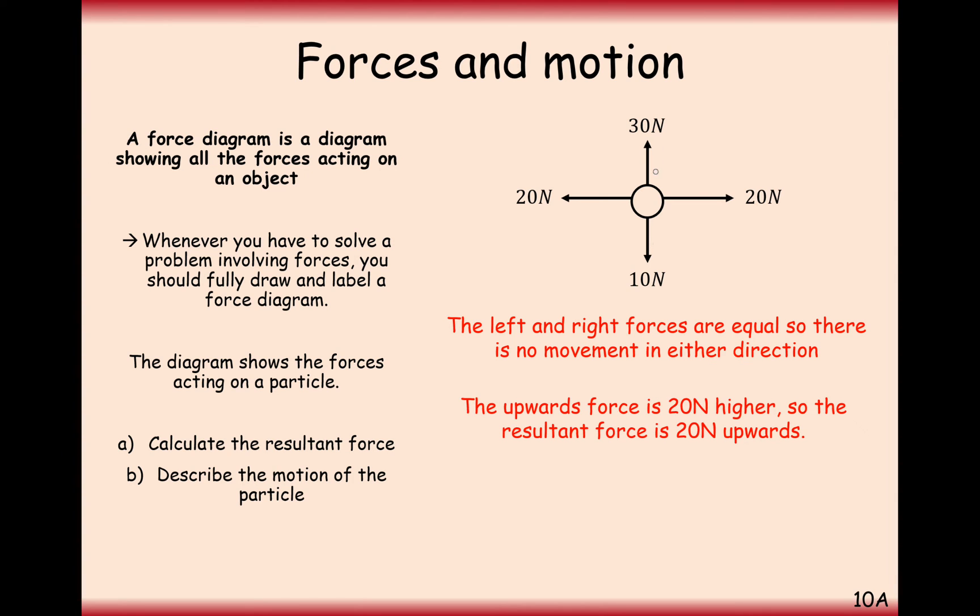For the up and down forces, we've got 30 going upwards and 10 going downwards. So that means that there's 20 newtons more force going upwards. So what we say here is the resultant force is 20 newtons upwards.